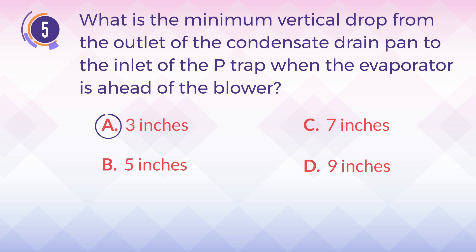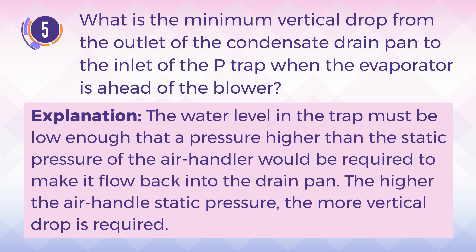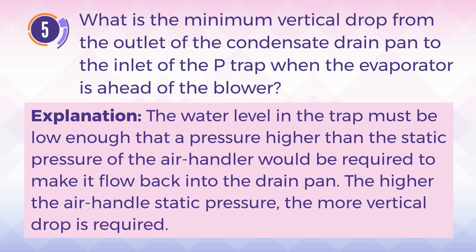The answer is A. 3 inches. Explanation: The water level in the trap must be low enough that a pressure higher than the static pressure of the air handler would be required to make it flow back into the drain pan. The higher the air handler static pressure, the more vertical drop is required.